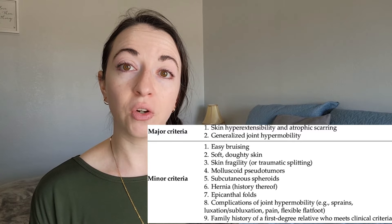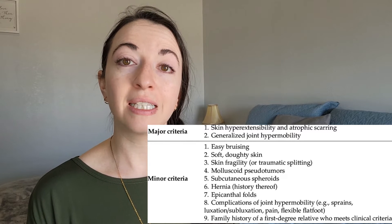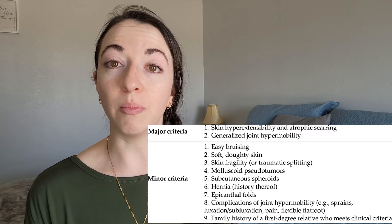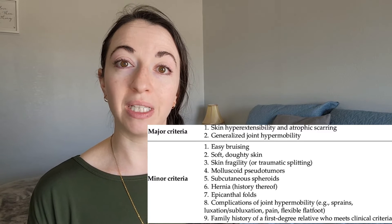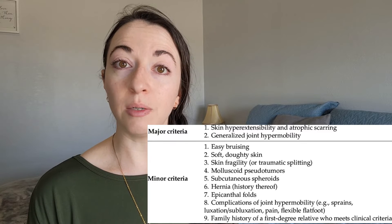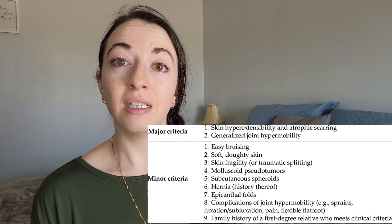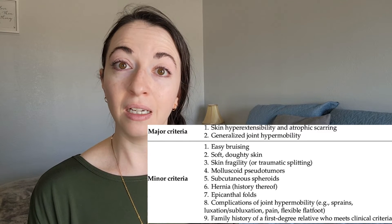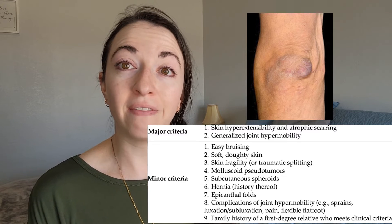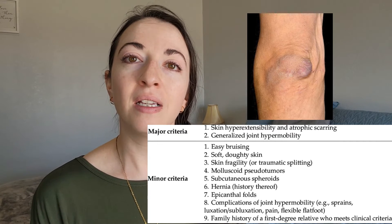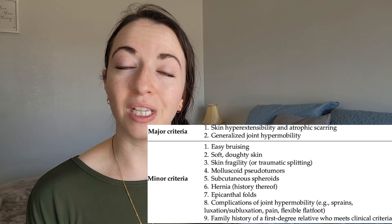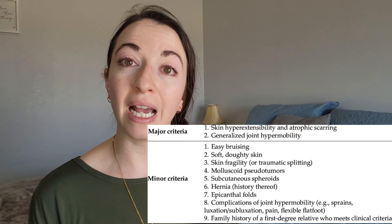The major criteria are: number one, skin hyperextensibility and atrophic scarring; and number two, generalized joint hypermobility. The minor criteria include: easy bruising, soft doughy skin, skin fragility or traumatic splitting, molluscoid pseudotumors — bluish-gray fleshy nodules on the knees and elbows — and subcutaneous spheroids, small hard movable nodules formed by calcified fat, usually on the shins and forearms.